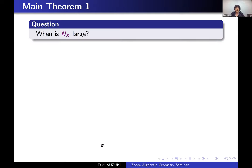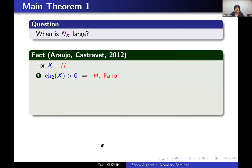So from now on, we consider the following natural question: when is Nx large? Namely, what kind of Fano manifold X has a long chain of higher-order minimal families? The following result, obtained by Araujo–Castravet in 2012, is related to this question.